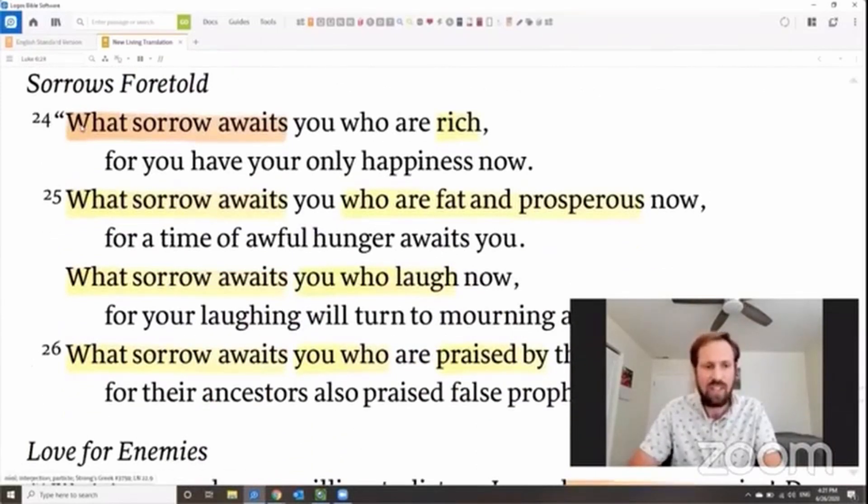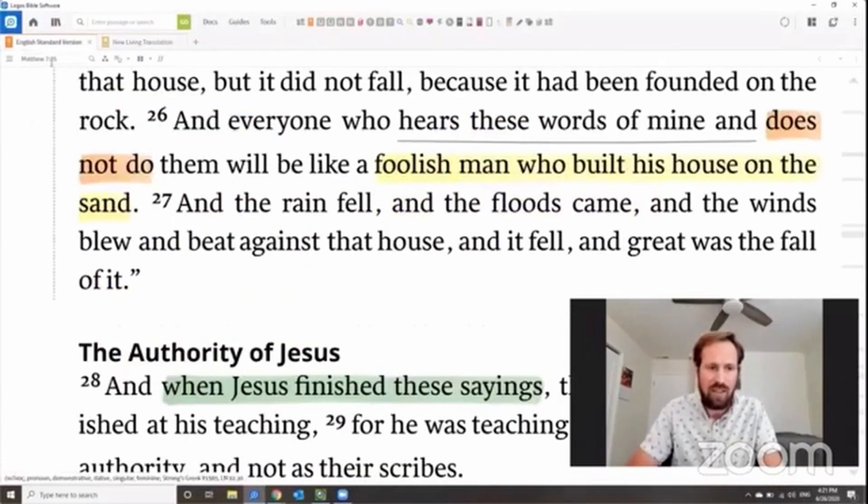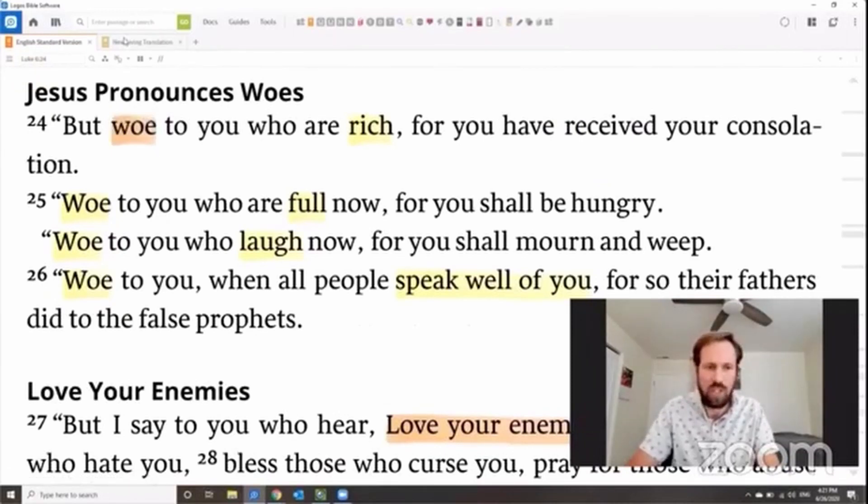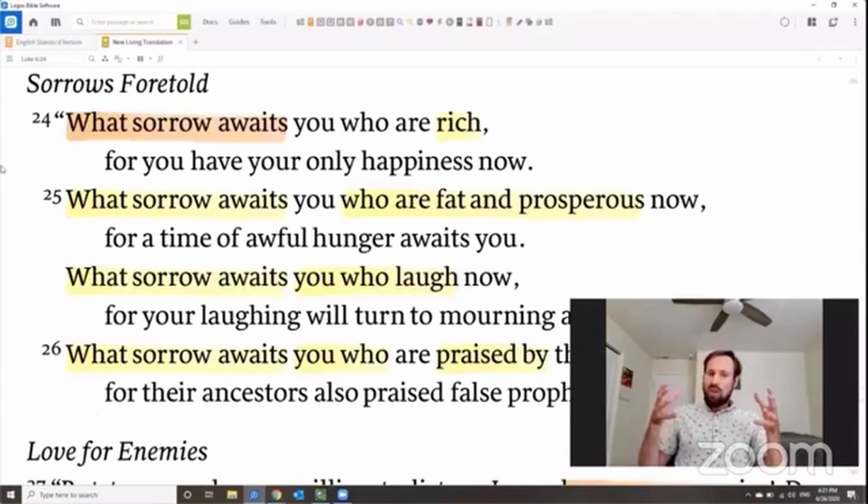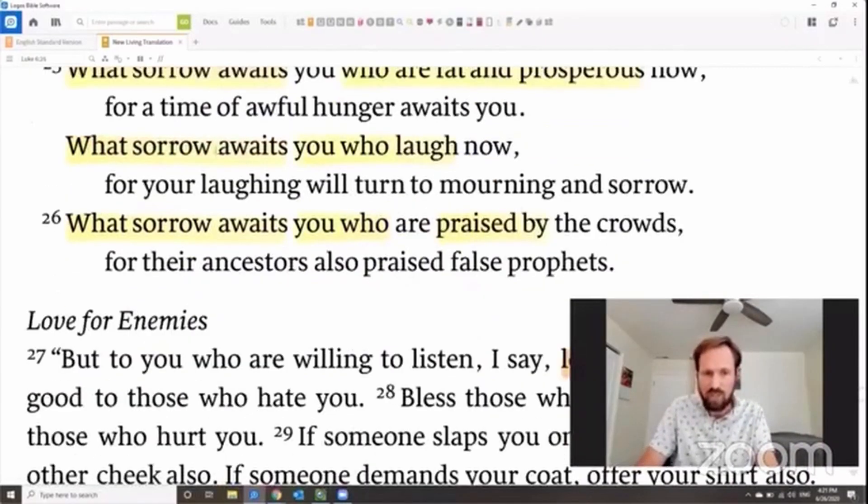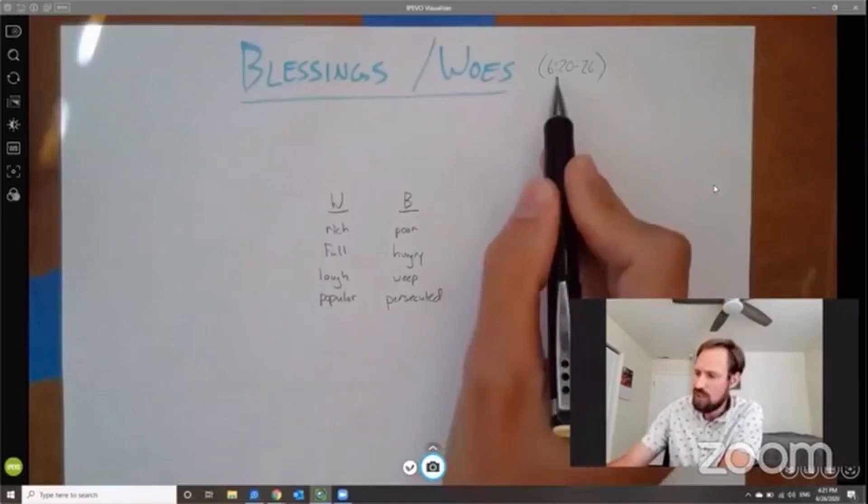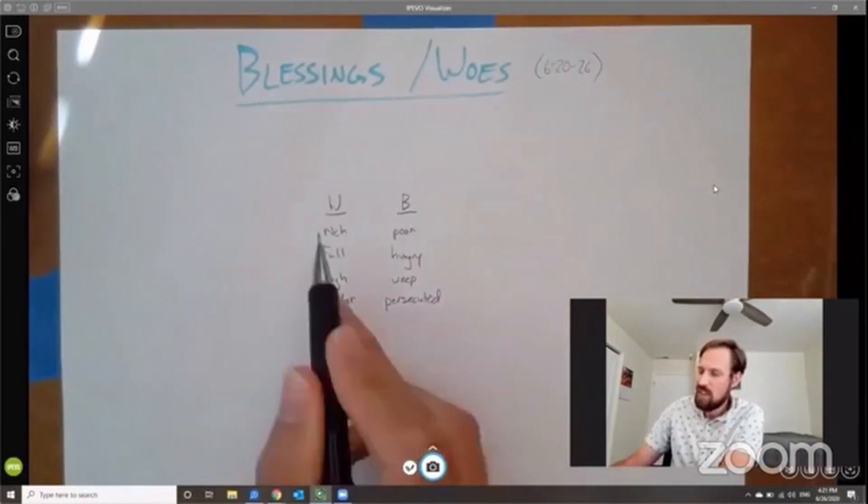Now, the NLT translates this word, what sorrow awaits. And the ESV, Luke 6:24, the ESV is going to use the word woe. Most translations go with woe. But let's read the New Living. What sorrow awaits you who are rich, for you have only your happiness now, in this reference to the present. What sorrow awaits you who are fat and prosperous now, for a time of awful hunger awaits you. What sorrow awaits you who laugh now, for your laughing will turn into mourning and sorrow. Finally, what sorrow awaits you who are praised by the crowds, for their ancestors also praised the false prophets. And we have here, in Luke 6, 20-26, four blessings and four woes.